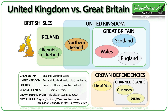So in summary: Great Britain is England, Scotland and Wales. The United Kingdom is England, Scotland, Wales and Northern Ireland. Ireland is the Republic of Ireland and Northern Ireland. The Crown Dependencies are the Isle of Man, Guernsey and Jersey. The British Isles are England, Scotland, Wales, Northern Ireland, Republic of Ireland, Isle of Man, Guernsey and Jersey. Of course, this could change at some time in the future due to Brexit or some other reason, though these are the current definitions of Great Britain and the United Kingdom.